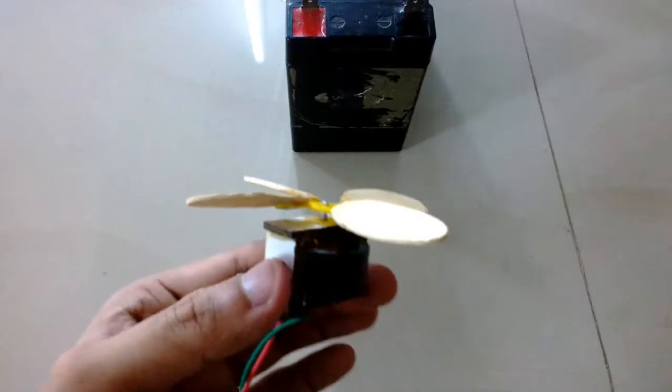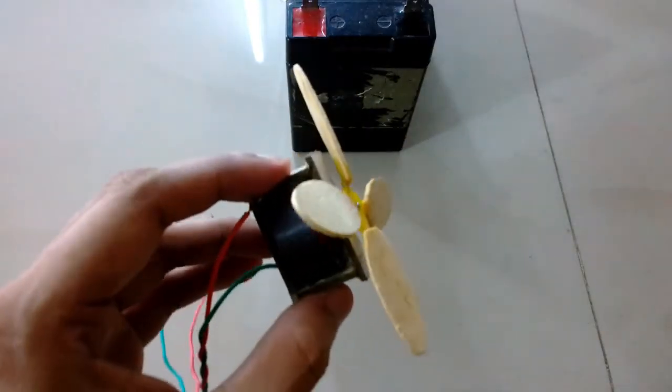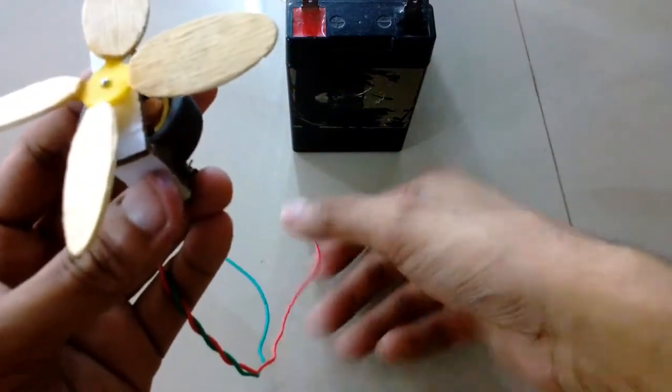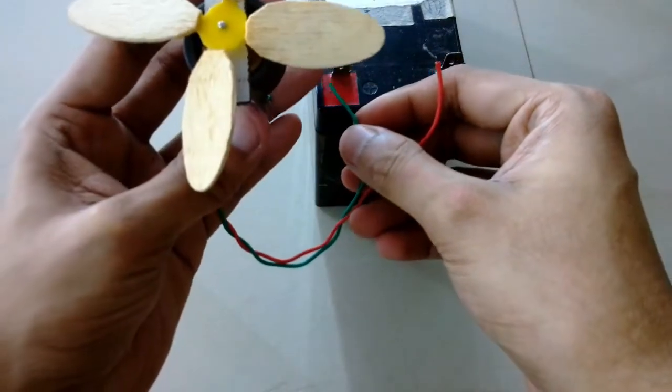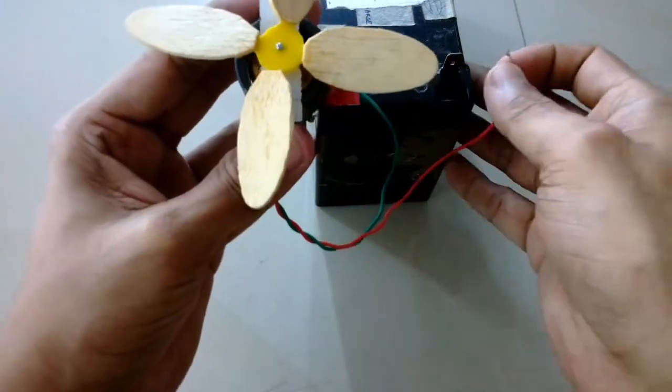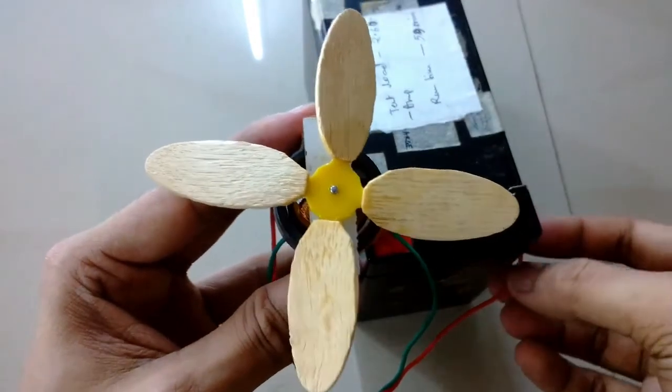Now I'm going to attach it to the motor. The 5-volt DC motor that I showed you earlier at the beginning of the video wasn't spinning fast enough, so I'm going to connect it to a 12-volt DC motor and try it out.